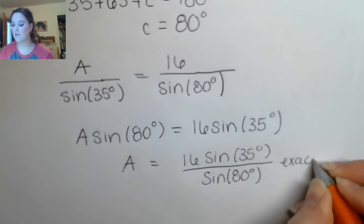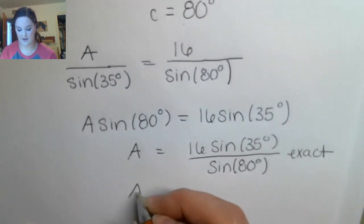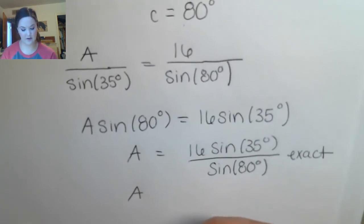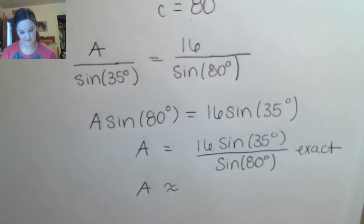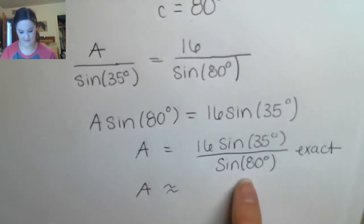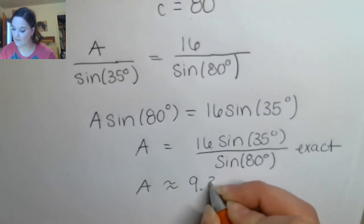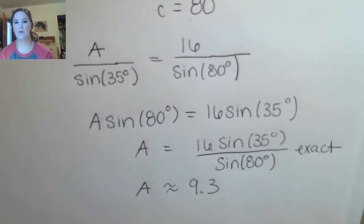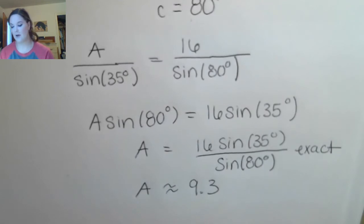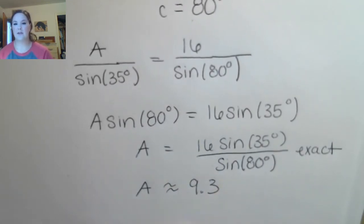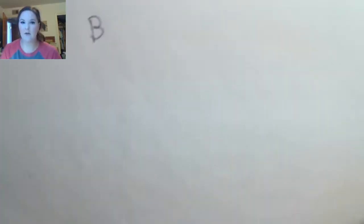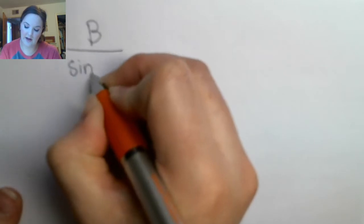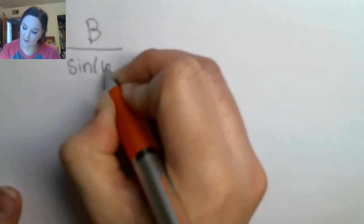We plug this into our calculator to get a value for A, which is approximately 9.3. Now we still need to find side length B. When setting up to find that side length, we're going to use side length B — because that's what we're interested in — and the corresponding angle B, which was 65 degrees.